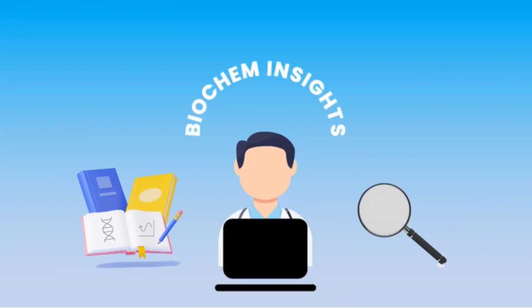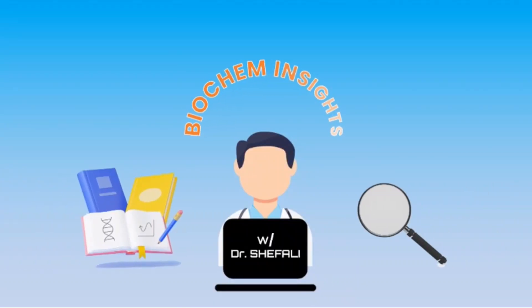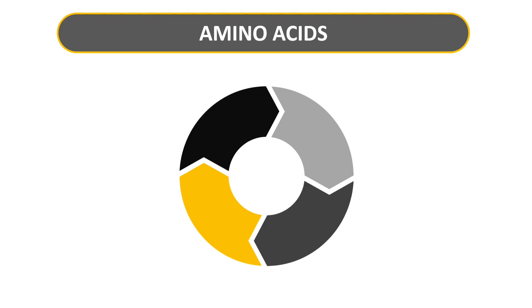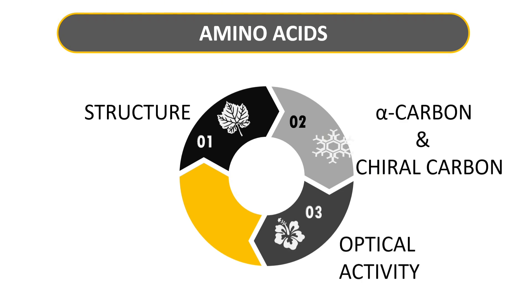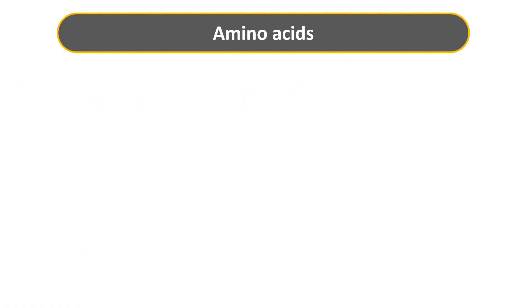Welcome to Biochem Insights with Dr. Shefali. In this video we are going to talk about structure of amino acids, alpha carbon and chiral carbon of amino acids, its optical activity and the D and L forms of amino acids. So let's start with the basics.